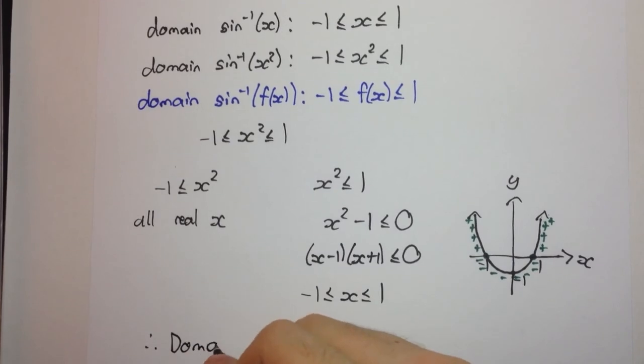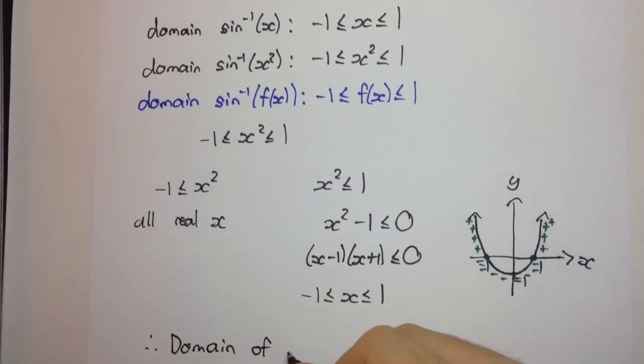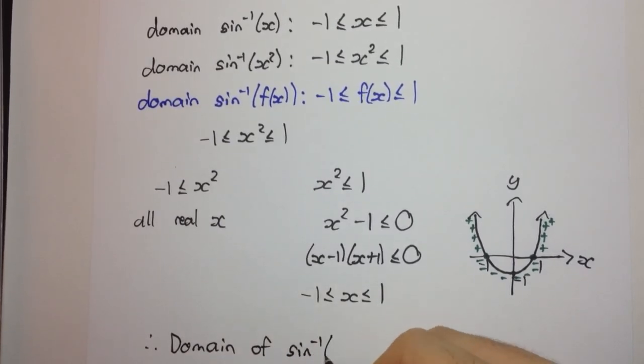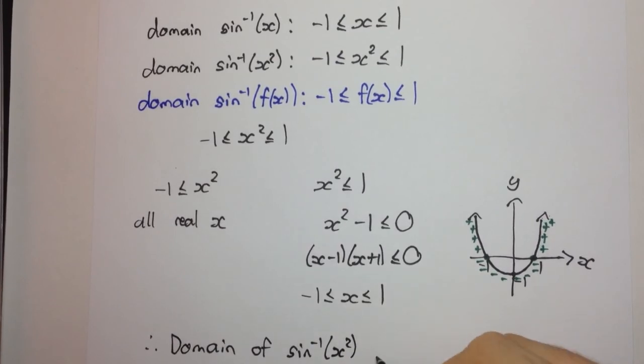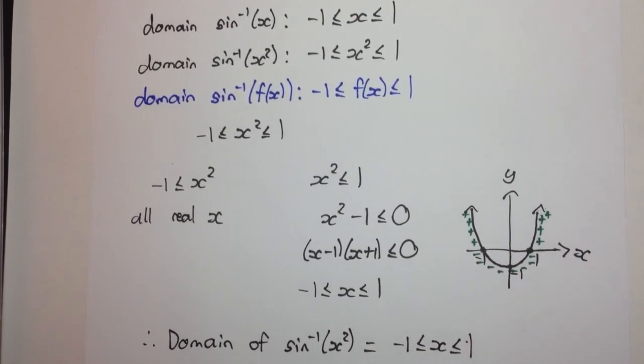the domain of sin inverse of x squared is minus 1, less than or equal to x, less than or equal to 1.